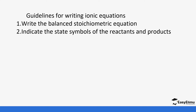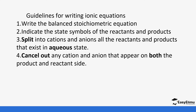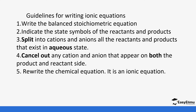It is important to indicate the state symbol for both reactants and products. After that, you are going to split the cations and anions — remember for ionic compounds in aqueous or molten state the ions are mobile. Then we are going to cancel any cation and anion that appears on both sides of the equation in aqueous state — basically the spectator ions. Finally, we derive the remaining equation, which is what we call the ionic equation.